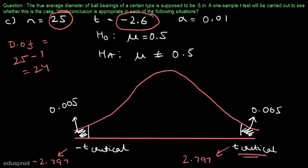Our t is equal to minus 2.6. Minus 2.6 will lie somewhere between minus t-critical and zero — it is not in the rejection region. So we can say that even in this case, we do not reject the null hypothesis at the 1% significance level. That means we can conclude that the true average diameter of ball bearings of a certain type is equal to 0.5 inches.